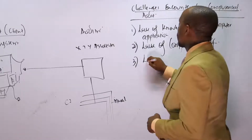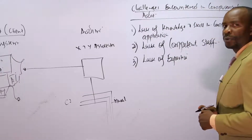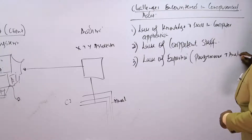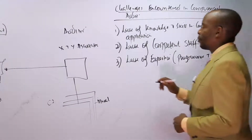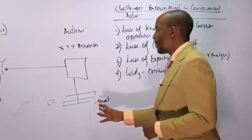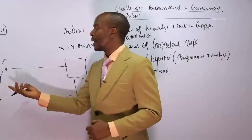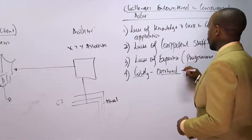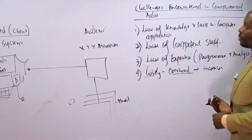Sometimes you also lack the necessary expertise. The key people we need in a computerized accounting audit are: a programmer, who can tell us how a program is working, and an analyst, who can present the logical flow of the system. Apart from being hard to find, these experts are also very costly. This increases the audit overheads, which is not ideal for the audit firm.